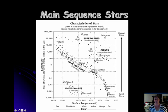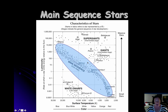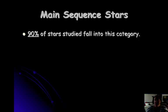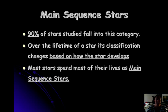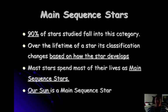The main sequence is this big section on the diagram, and this is actually where stars spend the majority of their lifetime. 90% of stars are in this category, in the main sequence. Over their lifetime, their classifications change based on how they develop, but most stars spend most of their lives as main sequence stars. Our sun is a main sequence star.